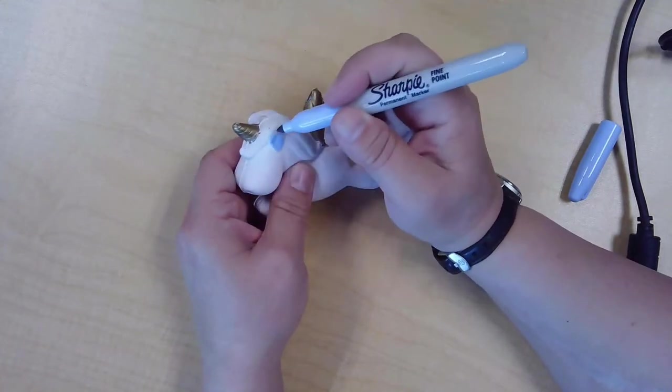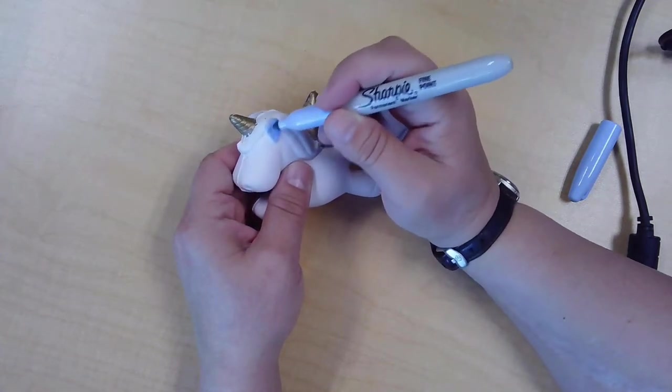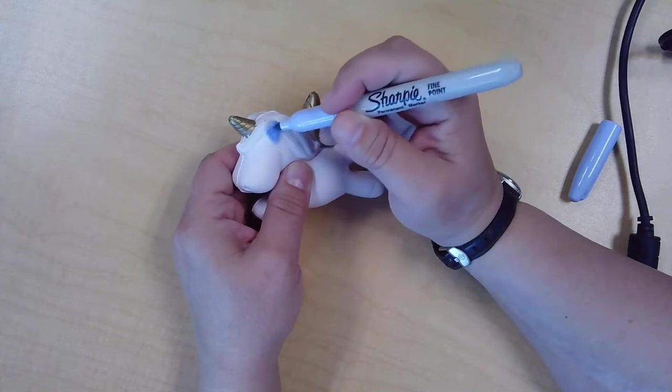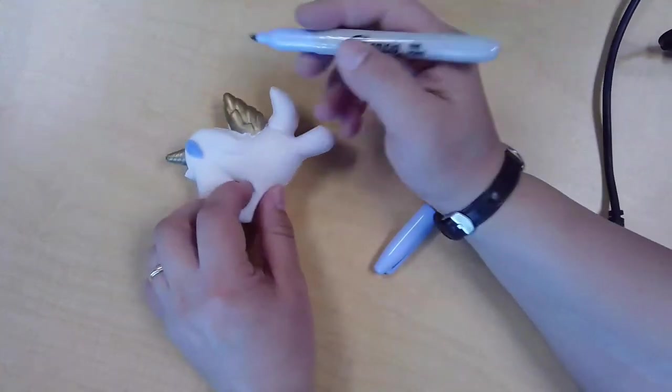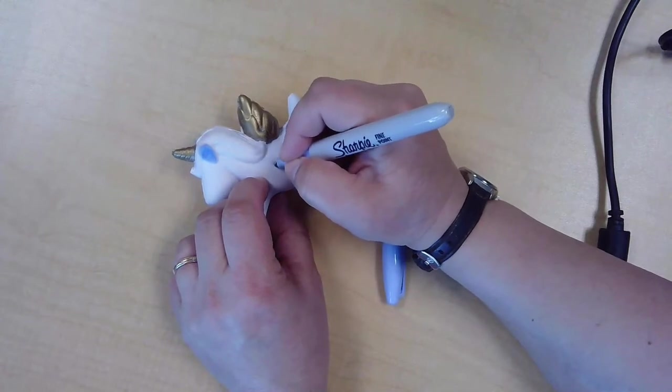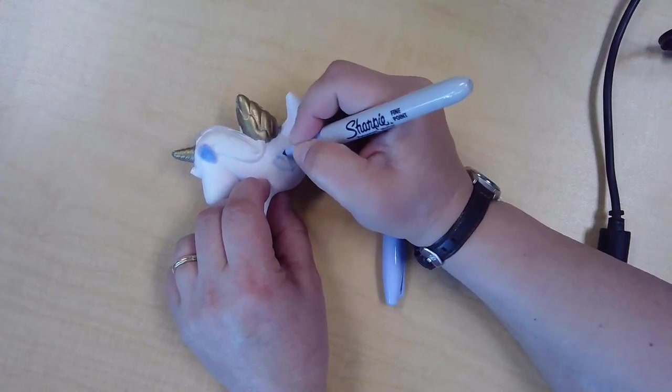After I do his little ears there, I'm going to leave his mane and tail white. And then I think I'm going to do some designs on him, kind of like how the Care Bears are. I'm going to give him a little heart on one side.